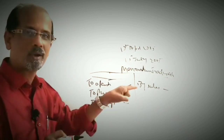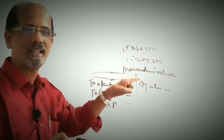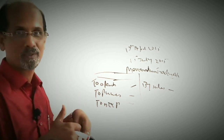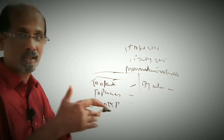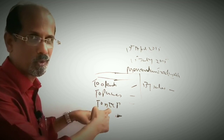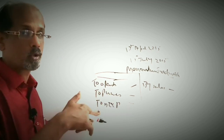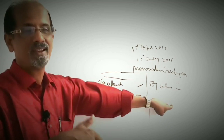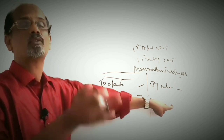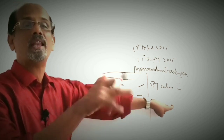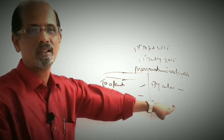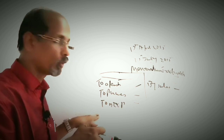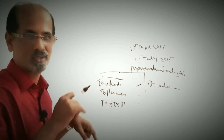To find out the closing stock at the date of fire, we need the gross profit. Usually, the result of a trading account is gross profit. But here, you will have to find out the value of stock destroyed by fire, so we have to find out the gross profit in advance.